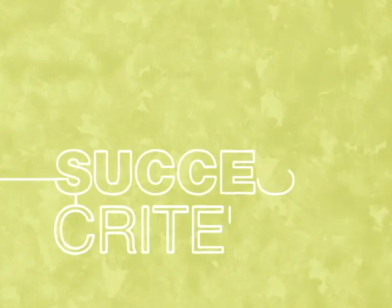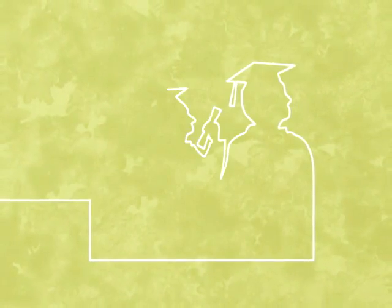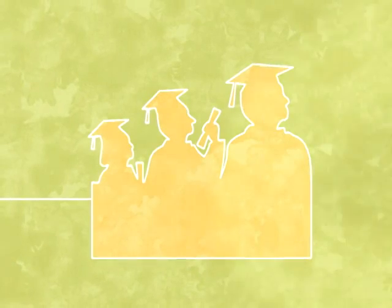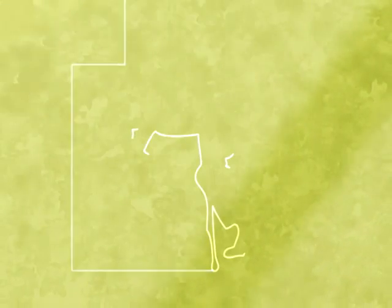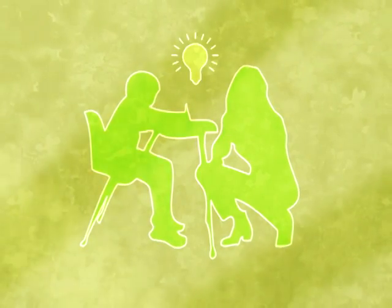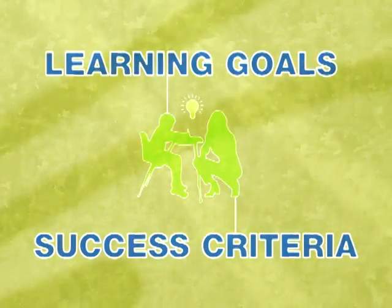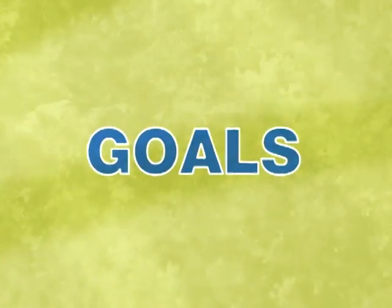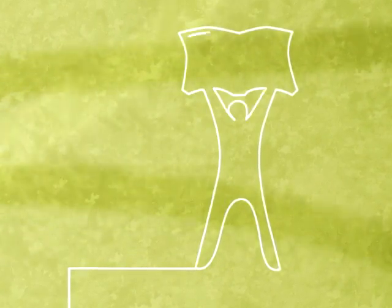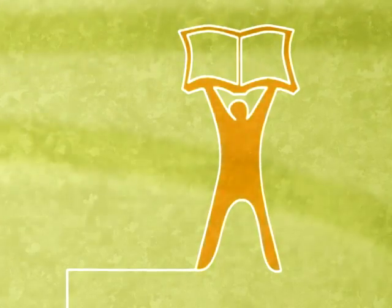Learning goals and success criteria are critical pieces of information students need to be successful learners. Students and teachers must hold a common understanding of what is to be learned and what successful achievement looks like. With explicit goals and criteria, students have the beginnings of what they need to become independent, self-monitoring learners.